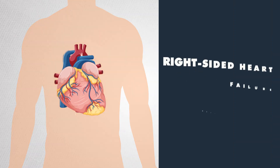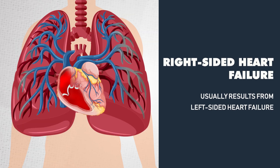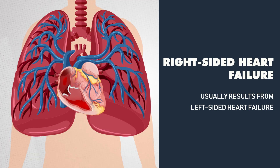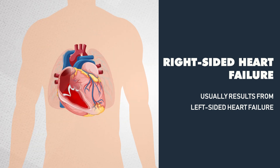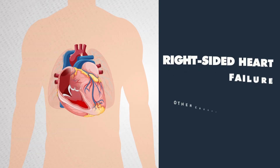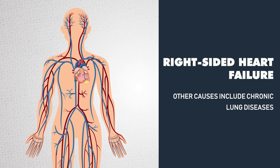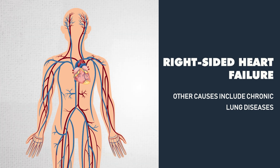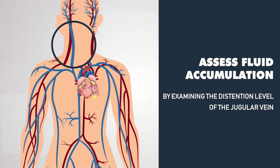Right-sided heart failure often results from left-sided heart failure. Increased pulmonary pressure makes it harder for the right ventricle to pump into the pulmonary artery, leading to systolic and eventually diastolic dysfunction. As compensation, the right ventricle wall grows thicker to pump harder, leading to a smaller heart chamber for filling. Other causes include chronic lung diseases. Because less blood is pumped from the right ventricle, blood backs up into the systemic circulation, causing fluid accumulation in different parts of the body. We can assess this by examining the distention level of the jugular vein, a very common finding in fluid overload and heart failure.